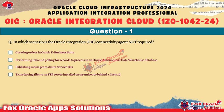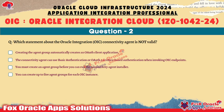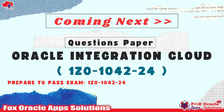I will share around 50 questions plus 10 additional questions in upcoming videos. The second sample question visible here is: 'Which statement about the Oracle Integration connectivity agent is not valid?' Again, four options are provided, including 'creates the agent group automatically,' 'creates and overwrites client applications,' and two other options.